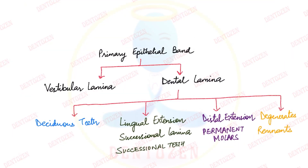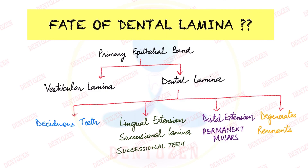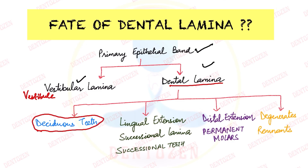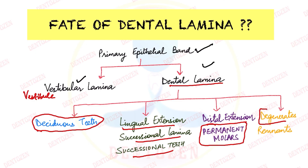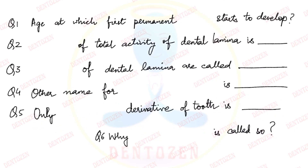So let's see the summary. The first structure to form is the primary epithelial band. It divides into two: vestibular lamina and dental lamina. Vestibular lamina gives rise to the oral vestibule. Dental lamina forms the ectodermal portion of deciduous teeth; its lingual extension forms successional lamina, giving rise to succedaneous teeth; its distal extension gives rise to permanent molars; and when it breaks down, its remnants are known as cell rests of Serres.